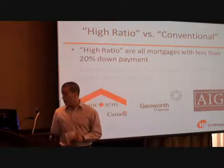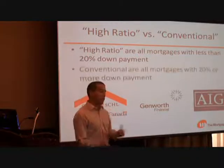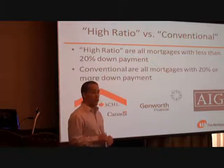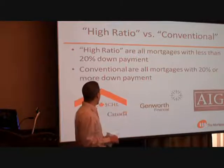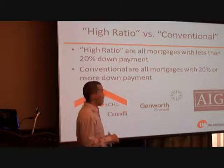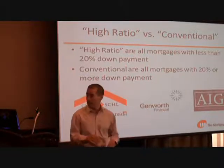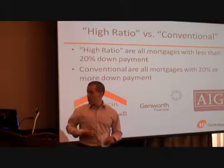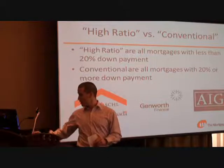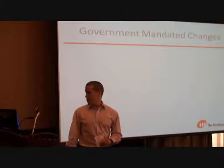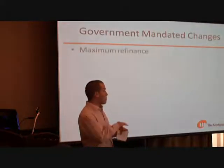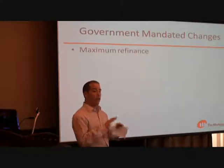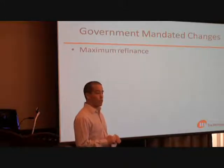Conventional is when there is more than 20% in the deal. So just two broad categories: high ratio and conventional. We wanted to set that up because the government mandated changes apply to all deals at all banks at all insurance companies when there is less than 20% down.